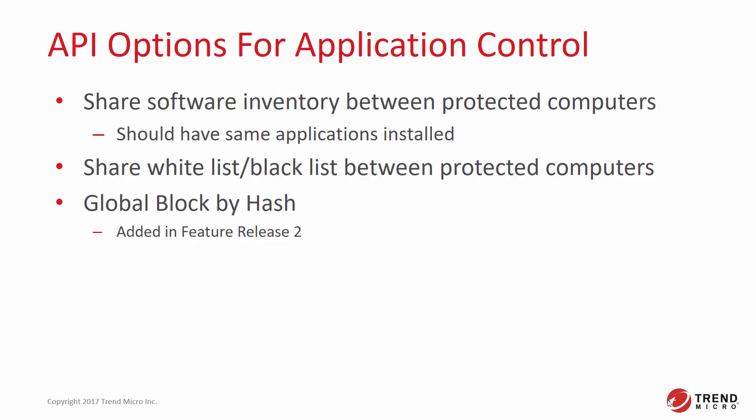There are some mechanisms within Application Control that are only available through the Deep Security API. This includes the ability to share software inventories between protected computers. If you have a large collection of computers with identical inventories, you can create the application inventory on one computer and then share that inventory with the other similar computers through the API. Also, if you have a whitelist or blacklist created for a protected computer, that can also be shared with other computers through the API.